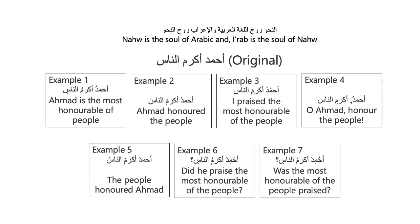Let's look at a particular sentence: 'Ahmadu Akramu Annaas.' It will give a meaning, however it may not be right, because there are seven examples using the same three letters making a sentence with seven different meanings. Example one: 'Ahmadu Akramu Annaas' — the meaning is 'Ahmad is the most honorable of all people.' Example two gives a different meaning. Example three: 'Ahmadu Akramu Annaas' — I praise the most honourable of the people.